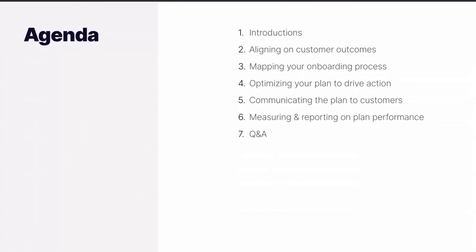We're going to talk first about how you get aligned on the outcomes that the customer is actually trying to reach — how do you discover those, document those, and ultimately align the plan to those? Then we'll go into mapping the process that you're going to go through with your customers to get them from where they are today to that successful outcome they're looking for.